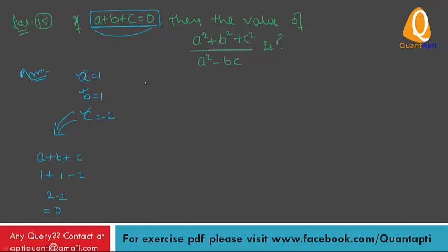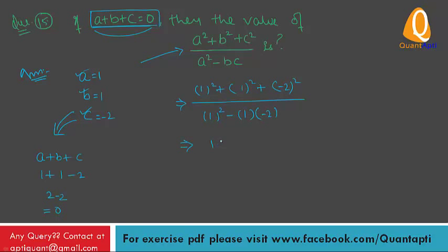Now put the values of a, b, and c in the expression. Numerator: 1 square plus 1 square plus minus 2 whole square. Denominator: 1 square minus 1 multiplied by minus 2. That gives 1 plus 1 plus 4 upon 1 plus 2, which is 6 upon 3, equal to 2. The answer is 2.